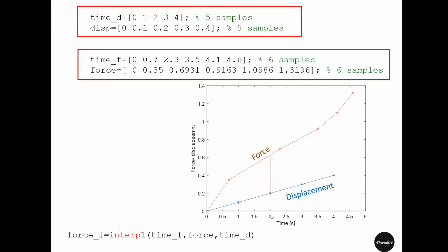To get the force at second 2 where we have a sample for displacement, this interp1 function will linearly interpolate between these two points and record a force response around 0.6.